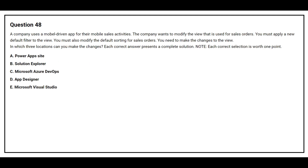Question 48: A company uses a model-driven app for their mobile sales activities. The company wants to modify the view used for sales orders. You must apply a new default filter to the view and modify the default sorting for sales orders. You need to make the changes to the view. In which three locations can you make the changes? Option A: Power Apps site. Option B: Solution Explorer. Option C: Microsoft Azure DevOps. Option D: App Designer. Option E: Microsoft Visual Studio. The correct answers are Option A: Power Apps site, Option C: Microsoft Azure DevOps, and Option D: App Designer.